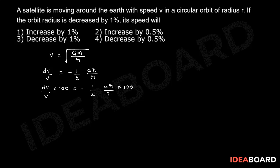Therefore, dv by v into 100 equals minus 1 by 2 into minus 1%.